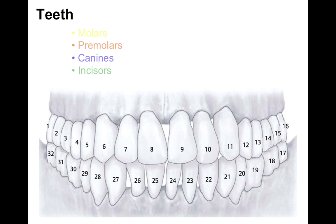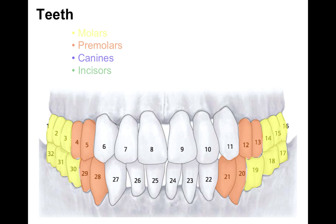Finally, teeth. Teeth are comprised of the following types. First are molars comprising teeth 1, 2, 3 on the upper right side; 14, 15, 16 upper left side; 17, 18, 19 lower left; and 30, 31, 32 lower right. Then we've got our premolars: 4, 5, 12, 13, 20, 21, 28, and 29.